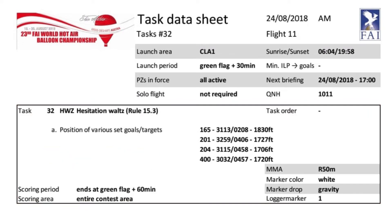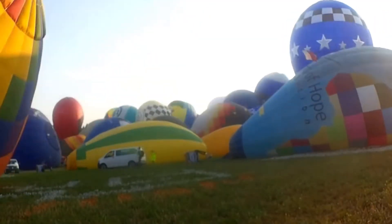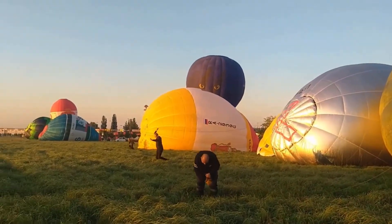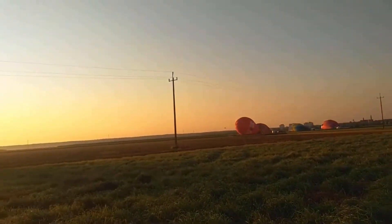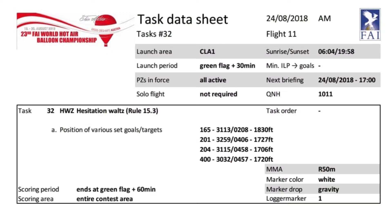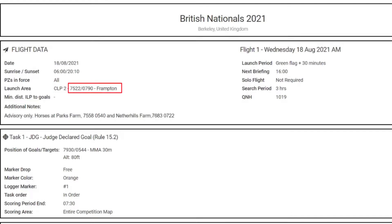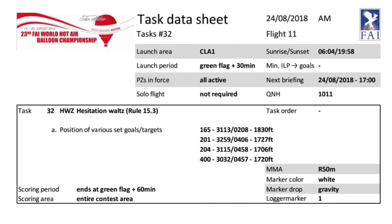The flight data will define several things, starting with the launch area, which will either be a common launch area — sometimes called common launch point — where all balloons launch together, or an individual launch point, ILP for short, where the pilots must find their own launch site for that flight. In the case of an ILP, the flight data will also define the minimum distance away from the targets that the pilots must launch from. In the case of a common launch area, the director can provide a grid reference on the task sheet, or list one of the CLAs or CLPs provided to pilots at an earlier stage, normally the general briefing. There are slight differences between CLAs and CLPs, but for our purposes and the scope of this video, they can be treated as the same.